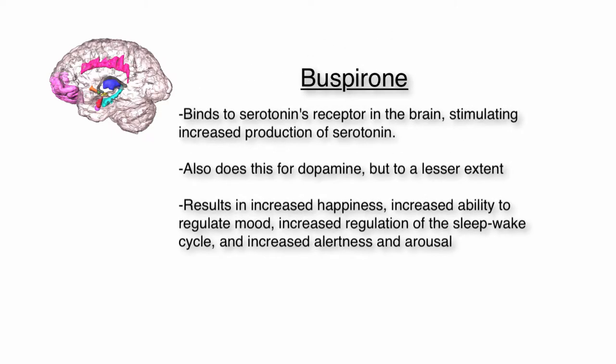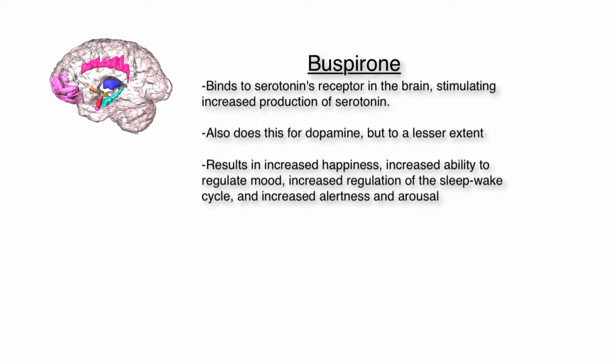Another drug commonly used to treat generalized anxiety disorder is buspirone. Buspirone acts by binding to the serotonin receptors in the brain, causing increased production of serotonin. It also helps to stimulate the production of dopamine by binding to the dopamine receptors, but to a lesser extent. Increasing dopamine and serotonin results in increased happiness, increased ability to regulate mood, increased regulation of the sleep-wake cycle, and increased alertness and arousal.